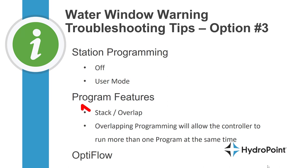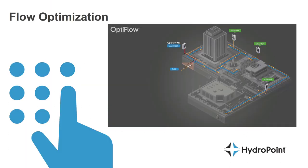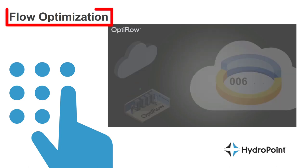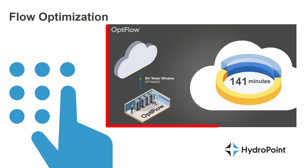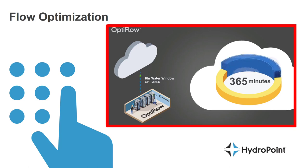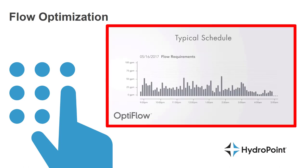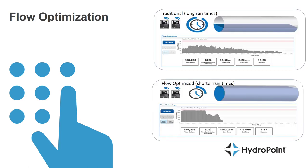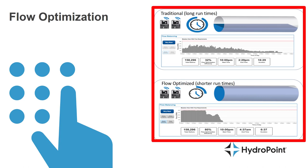In addition, there's some advanced programming that can help you find more time in the water window. Things like the stack and overlap feature will allow multiple programs to run at the same time inside the watering window, and watering multiple stations at once is a great way to get through a lot of irrigation in a very short time. That is the beauty of the OptiFlow features — with WeatherTrack OptiFlow, the system is capable of flow optimization, which will optimize your irrigation schedule to keep your irrigation system running at the system's capacity, using as much water as it can for as long as it can.